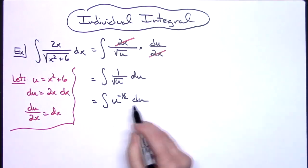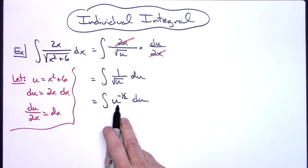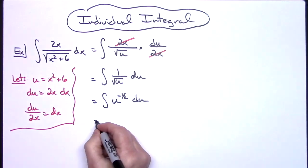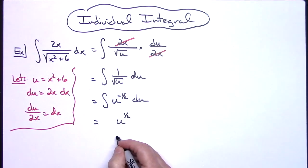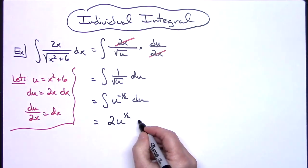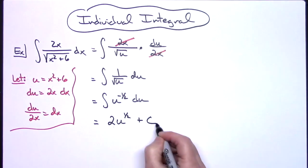At this point, I'm going to be able to integrate this. I'm going to add 1, so I'll have u to the 1 half, and then in front I'll have a 2. I can go ahead and put the plus C on at this point.